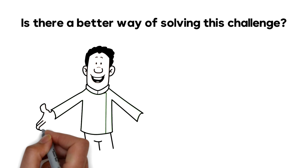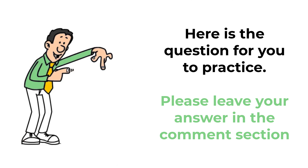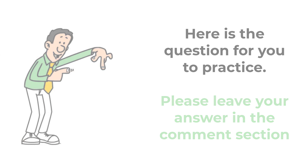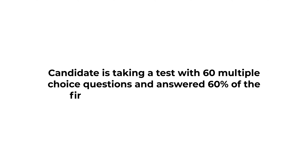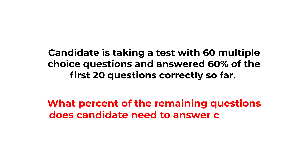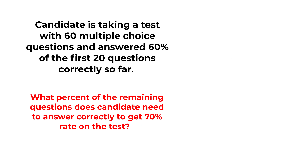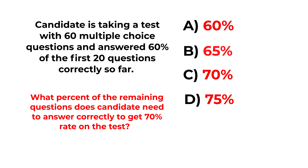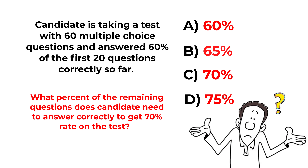Here's a practice question: a candidate is taking a test with 60 multiple-choice questions and has answered 60% of the first 20 questions correctly. What percentage of the remaining questions does the candidate need to answer correctly to achieve a 70% rate on the full test? Choices: A) 60%, B) 65%, C) 70%, D) 75%. Post your calculated answer in the comments so I can give you feedback. Thanks for participating and good luck.